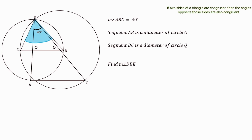Let's take the second given first. AB is a diameter of circle O — circle O is the smaller circle with center O, which I'm labeling in green. If AB is a diameter of circle O, then OA and OB are radii of the circle, and since all radii of a given circle are congruent, OA is congruent to OB. And there is another radius of circle O in this diagram: OE. It is also a radius and therefore congruent to OA and OB.